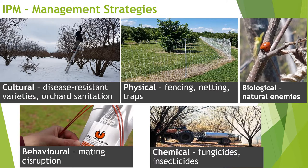Physical management practices involve the exclusion of the pest from the orchard or attracting it away. That can include fencing and netting for deer or squirrels, or mass trapping. Some hazelnut growers have used mass traps to try to attract Japanese beetles out of the orchard and into the traps. All of these have been done to more or less degree of success, but those are all examples of physical controls.